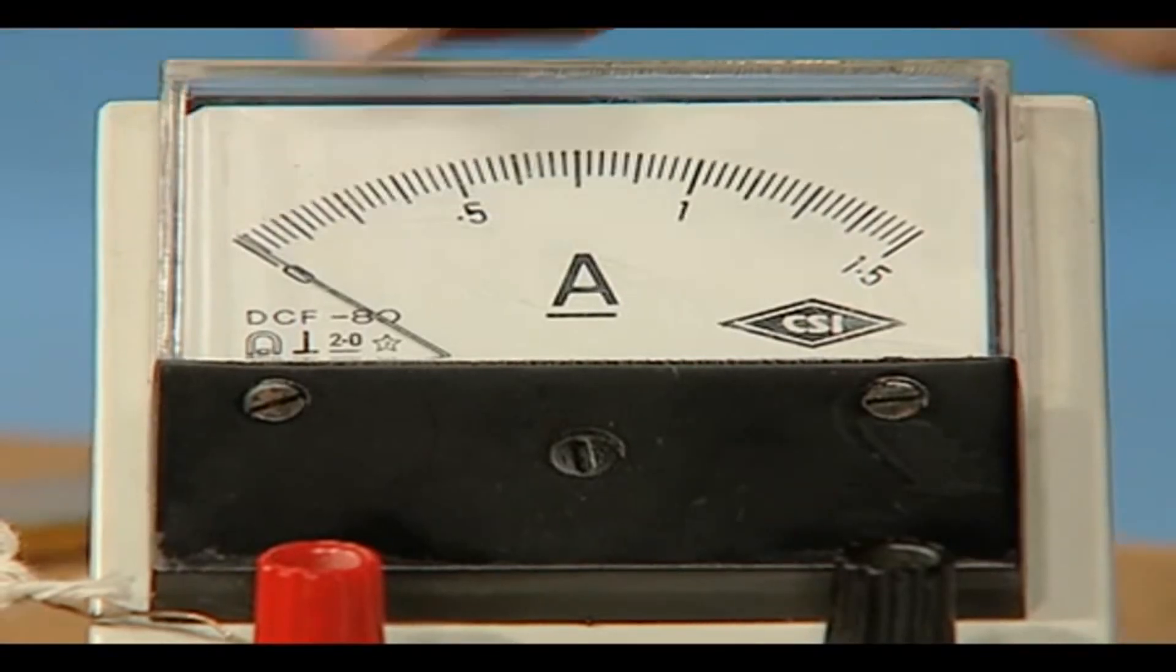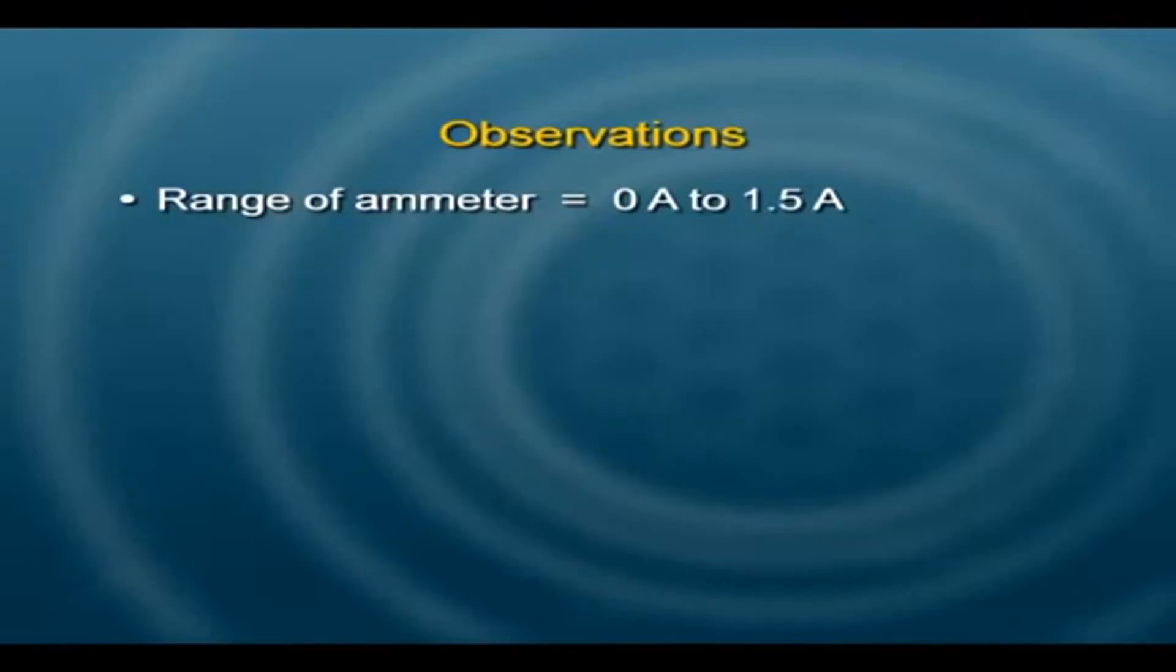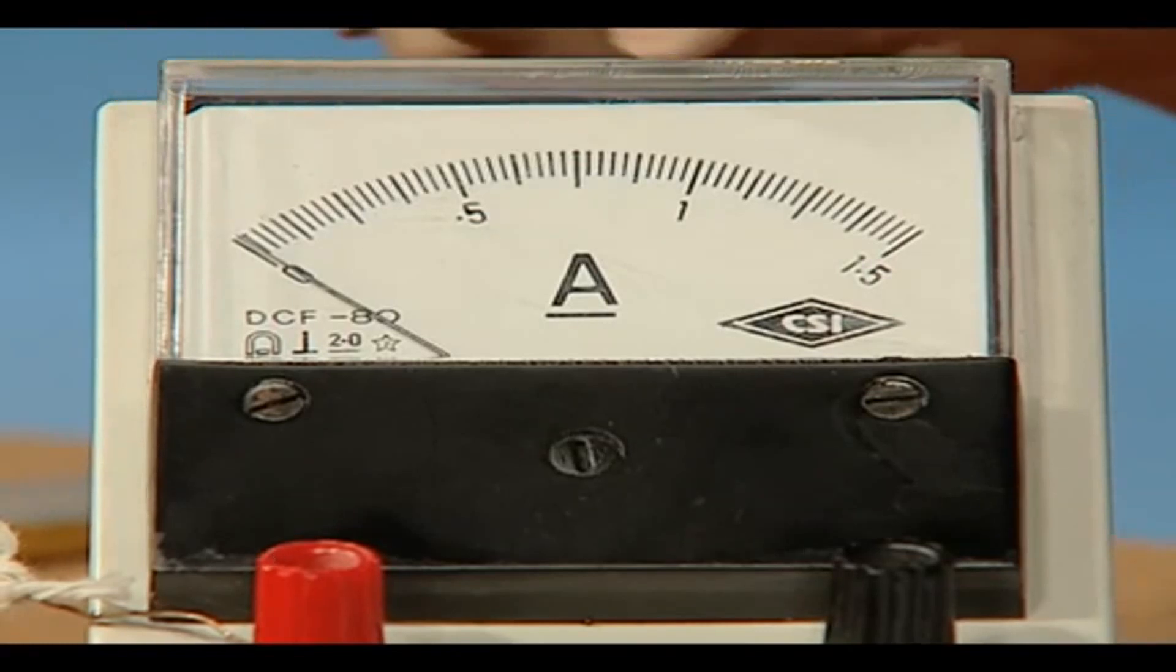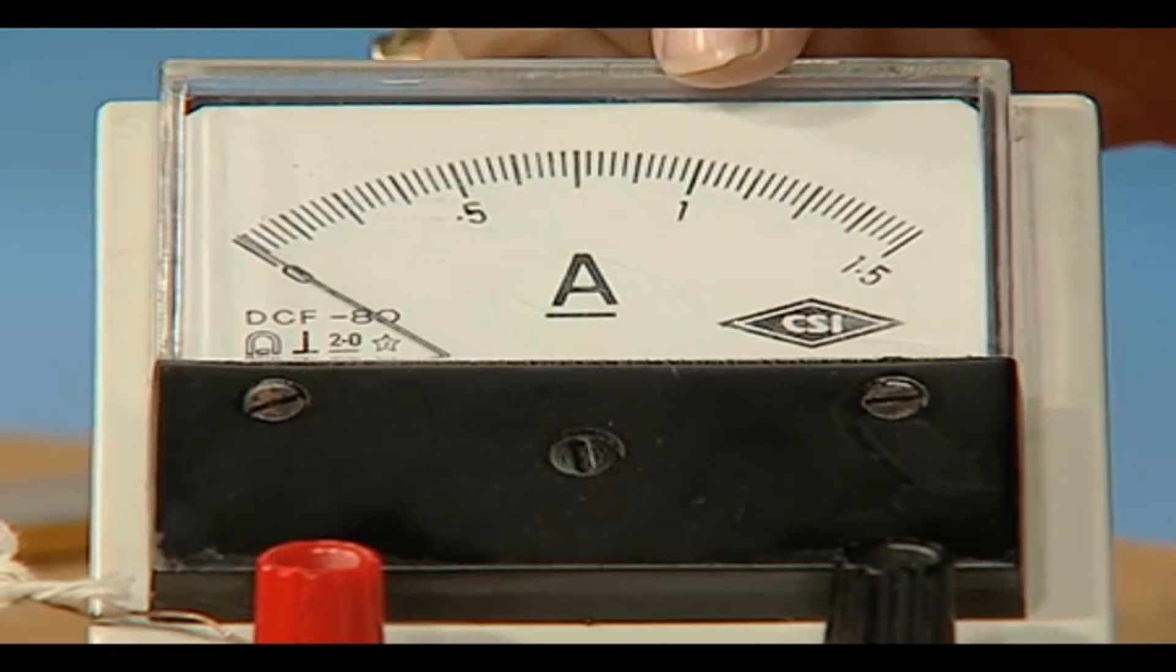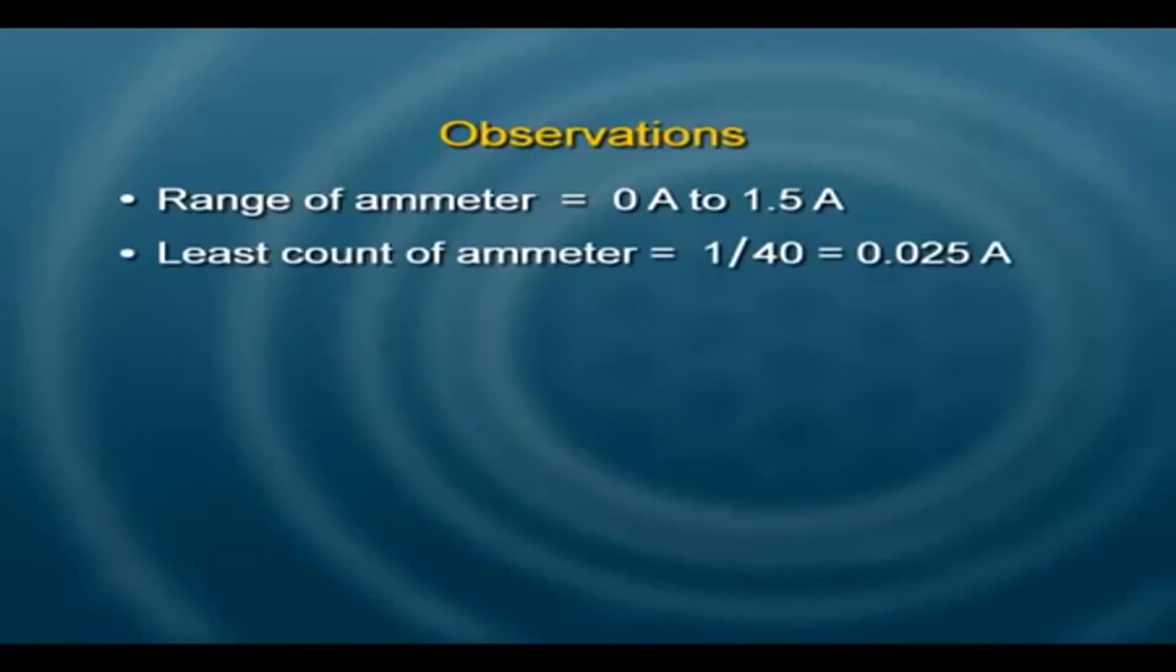The ammeter range is from 0 to 1.5 amperes. We can find the least count by determining the number of divisions between 0 and 1. If we see this carefully, there are 40 divisions. So 1 upon 40 is my least count, which calculates to 0.025 amperes.